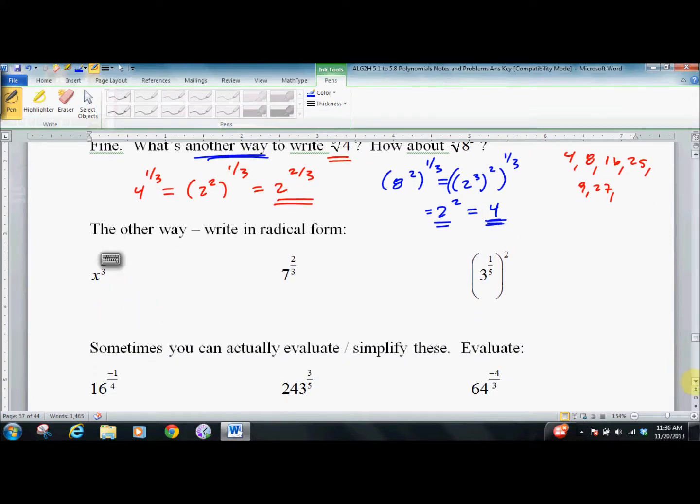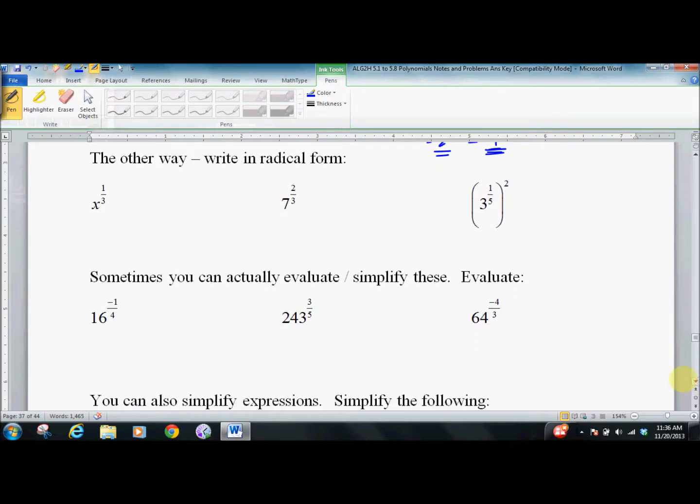Let's write it as a third root of x. In this case, we have actually two choices. We can say it's the third root of 7 squared, or we can say it's the square of the third root of 7. You have two choices in that case. In this case, you don't have two choices. You have to say the root of 3 squared, because the fifth root is inside the parentheses and you have to do that part first.